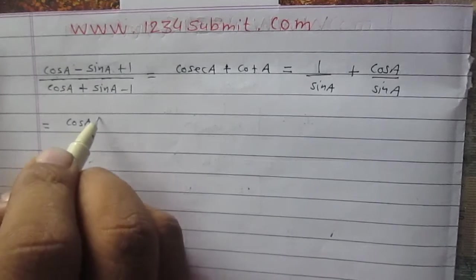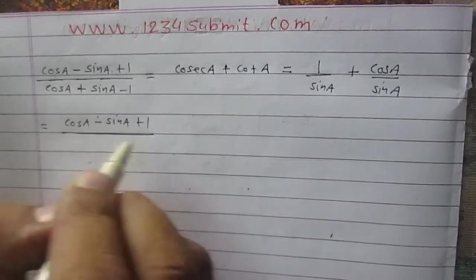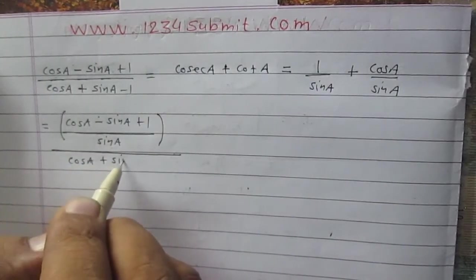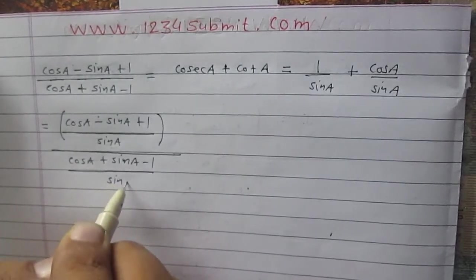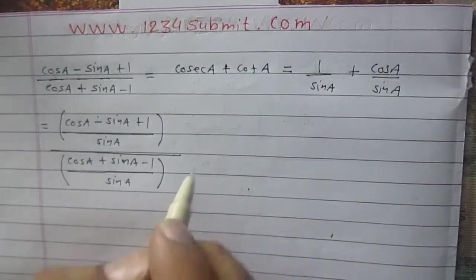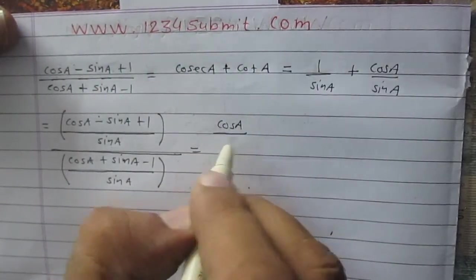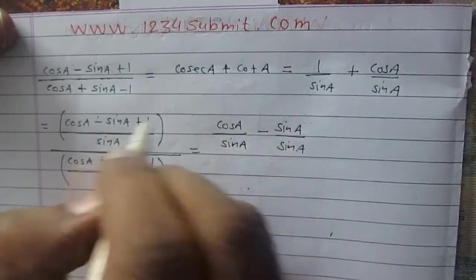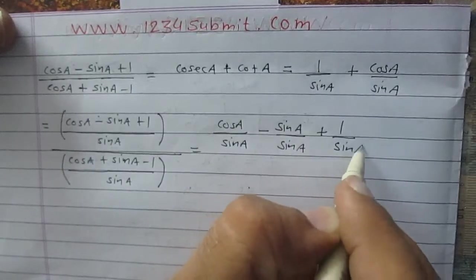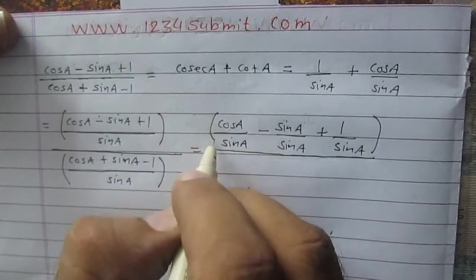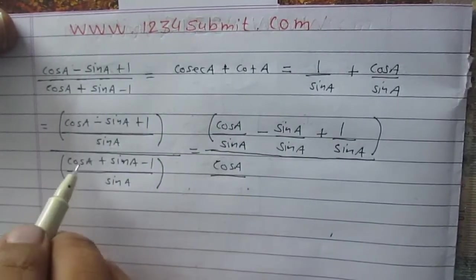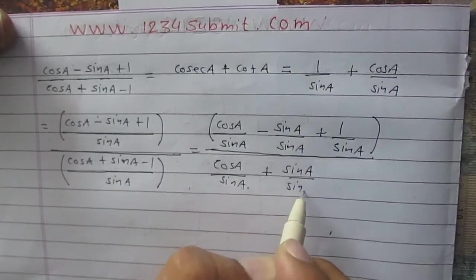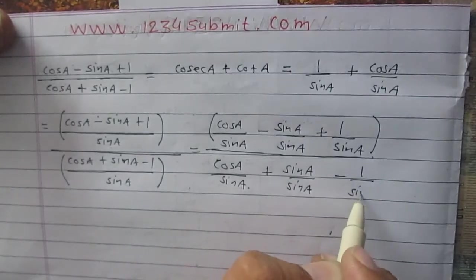After dividing by sinA, the numerator becomes (cosA minus sinA plus 1) divided by sinA, and the denominator becomes (cosA plus sinA minus 1) divided by sinA. This expands as: numerator = cosA/sinA minus sinA/sinA plus 1/sinA, and denominator = cosA/sinA plus sinA/sinA minus 1/sinA.